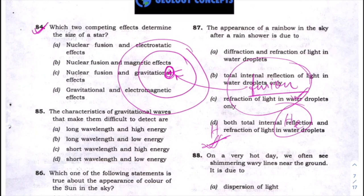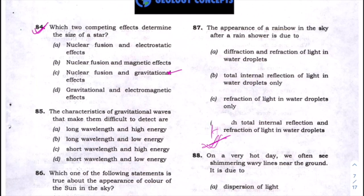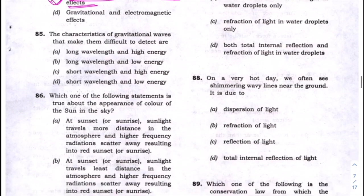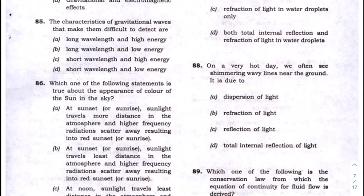So this is the life cycle of a star. Going through the options, we find that nuclear fusion and gravitational effects are the two competing effects that determine the size of a star. The next question is about the characteristics of gravitational waves that make them difficult to detect.